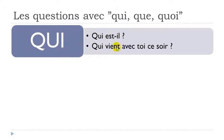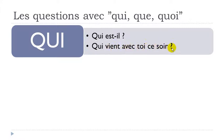Let's see another example: QUI VIENT — VIENT comes from VENIR, which means 'to come.' So QUI VIENT AVEC TOI CE SOIR — who is coming with you this evening? QUI VIENT AVEC TOI CE SOIR.